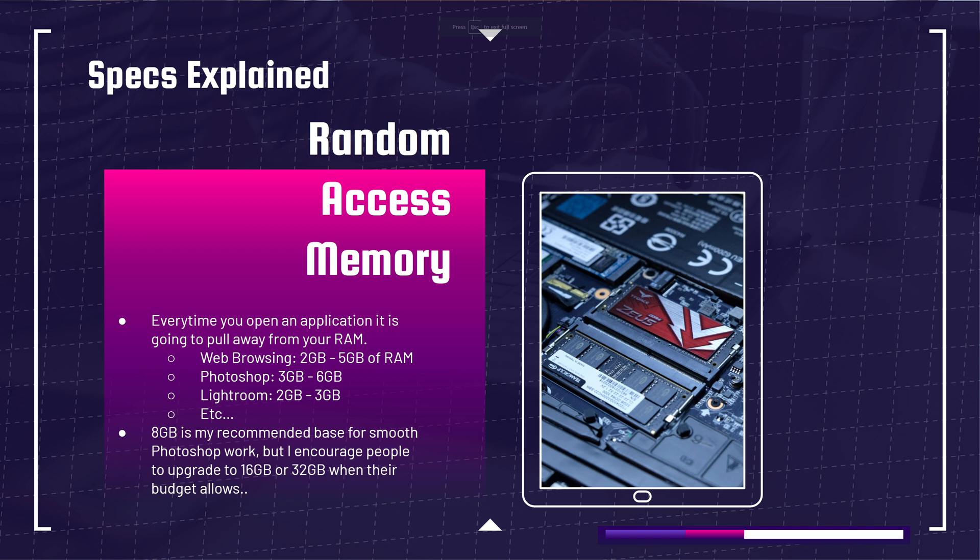Let's say you open Photoshop and Lightroom. Photoshop is going to use maybe three to six gigs of RAM, and then Lightroom will use two to three gigs of RAM. So you can see RAM can be used up rather quickly as you start multitasking.